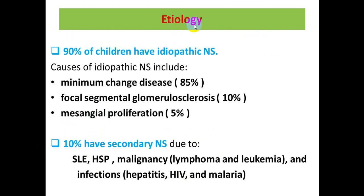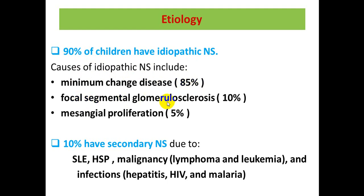The causes of nephrotic syndrome are classified into two groups. The first is idiopathic nephrotic syndrome, accounting for about 90% of cases. Types include minimal change disease (~85%), focal segmental glomerulosclerosis (~10%), and mesangial proliferation (~5%).